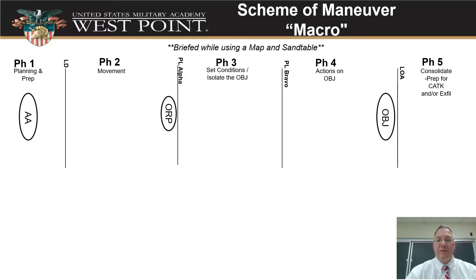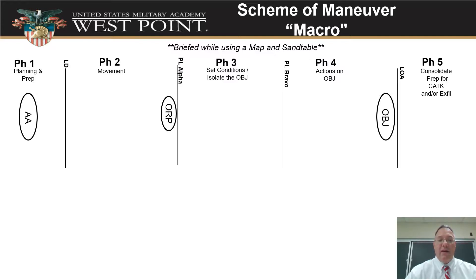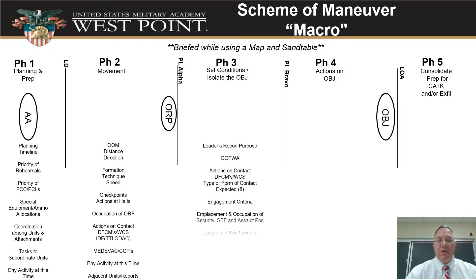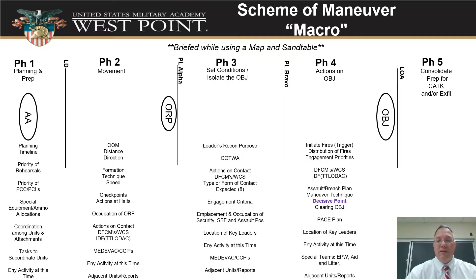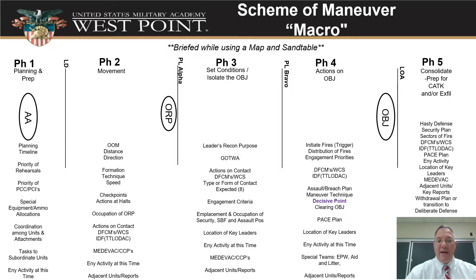So let's talk about the scheme of maneuver in a big picture. We're going to brief the scheme of maneuver using our map or our sand table. Starting out, we've got our phases and key areas going from the assembly area to the objective and beyond, with phase lines in between. We have a set of tasks that are going to go along with each phase and details we have to talk about, so let's break those down.